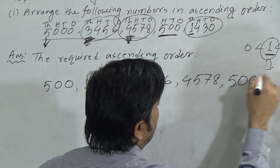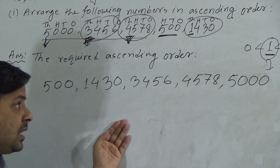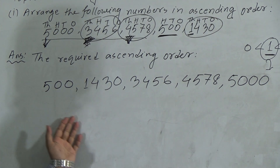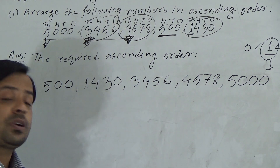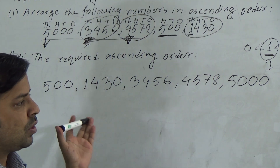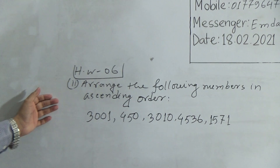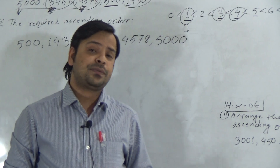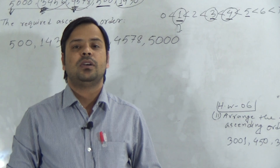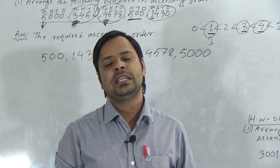I have arranged all the given numbers in ascending order. Dear students, if digits in the same position are equal, then you have to compare the next position. Following my lecture, arrange the given numbers in ascending order — this is your homework. Submit your homework next Saturday at the school campus from 9 a.m. to 3 p.m. Keep practicing at home. Stay safe. See you again. Assalamu alaikum.